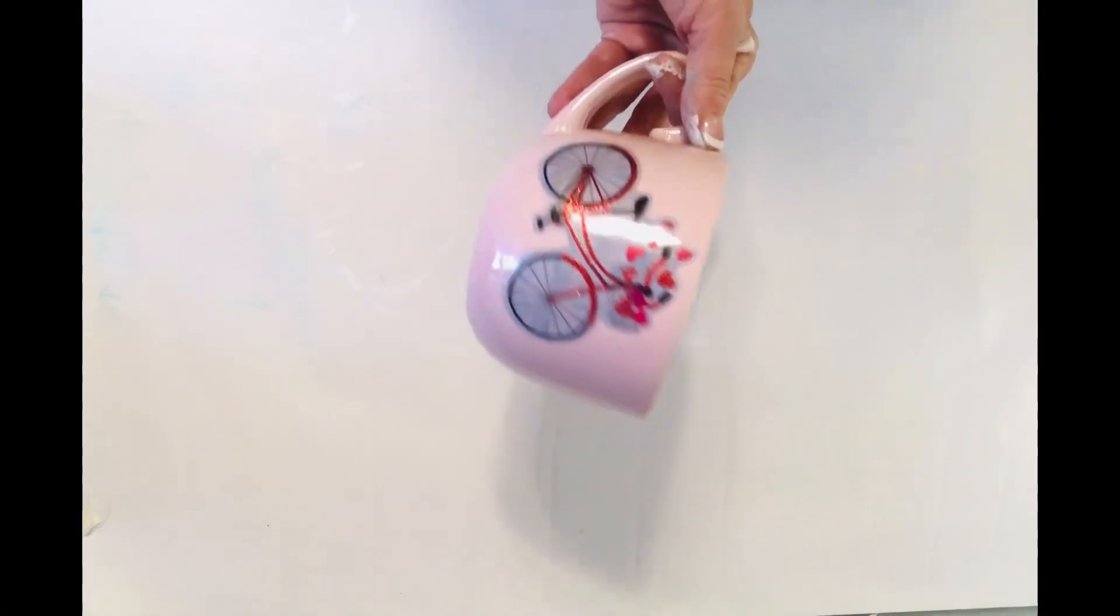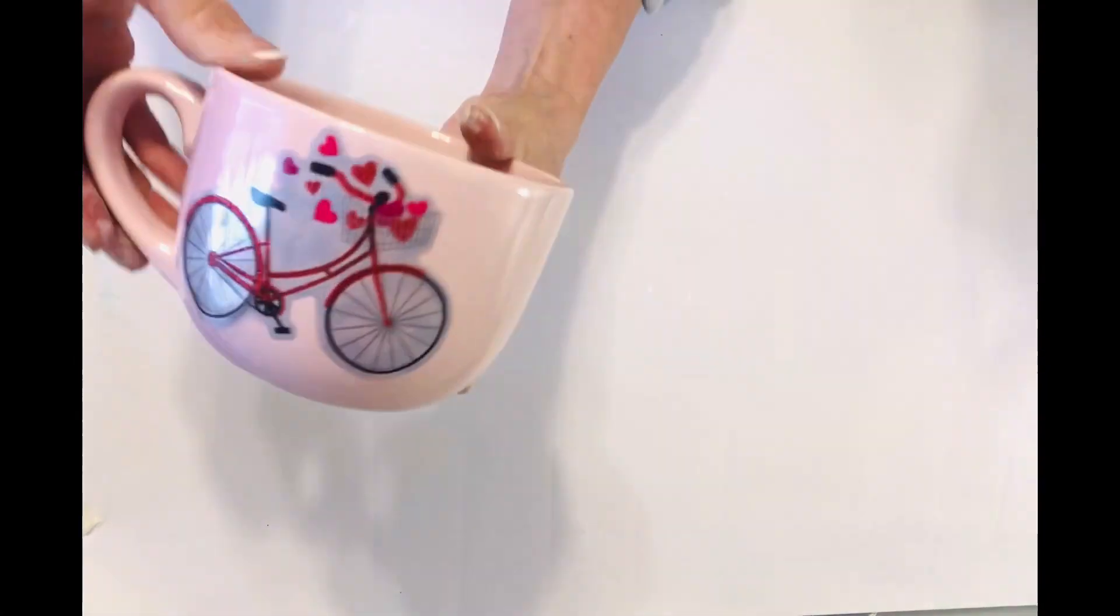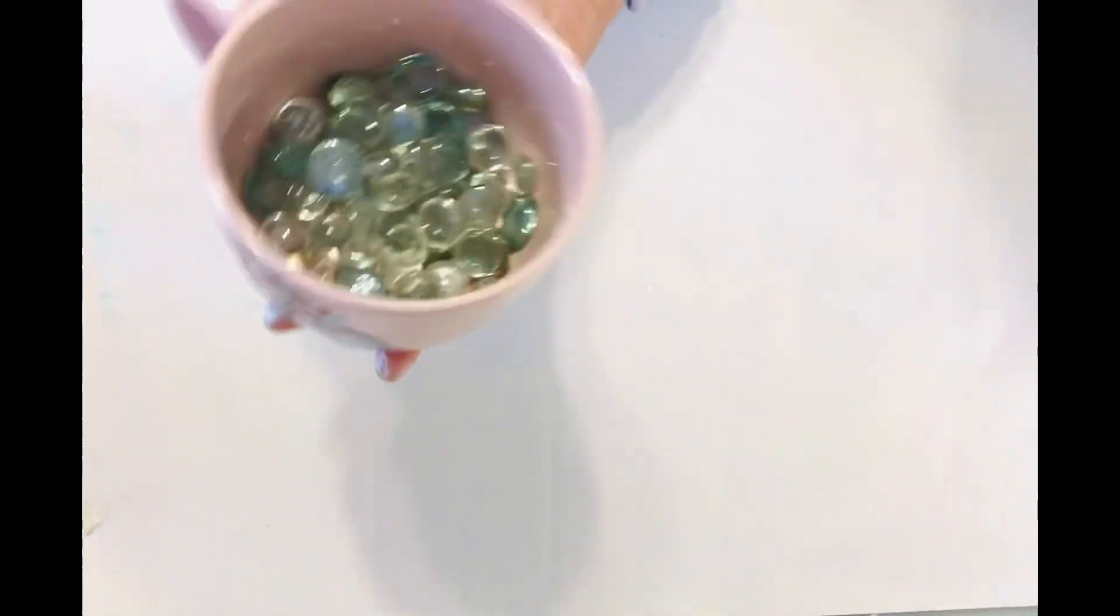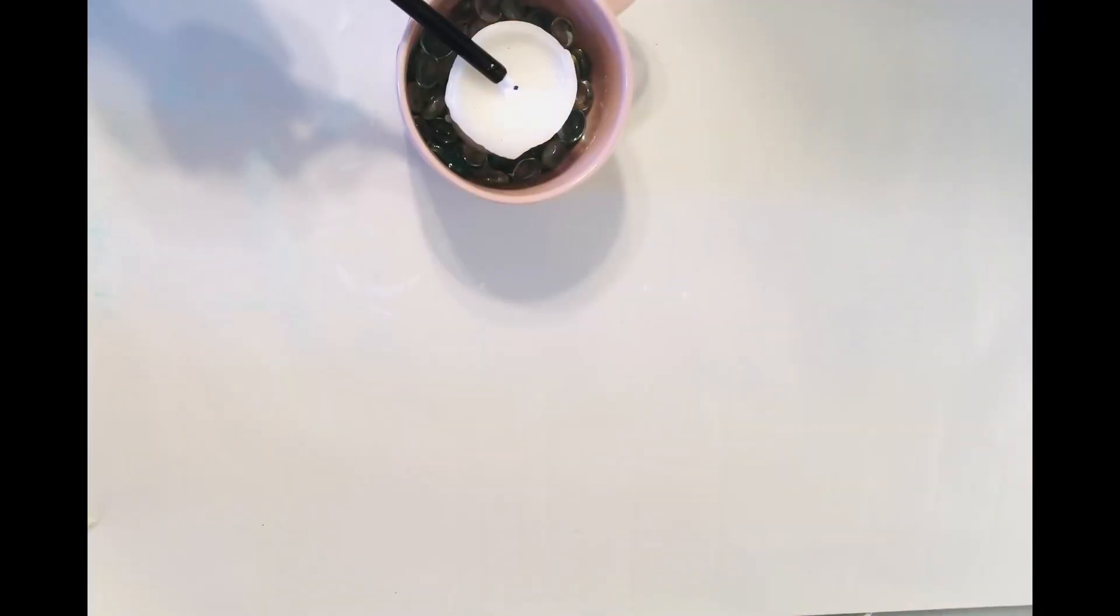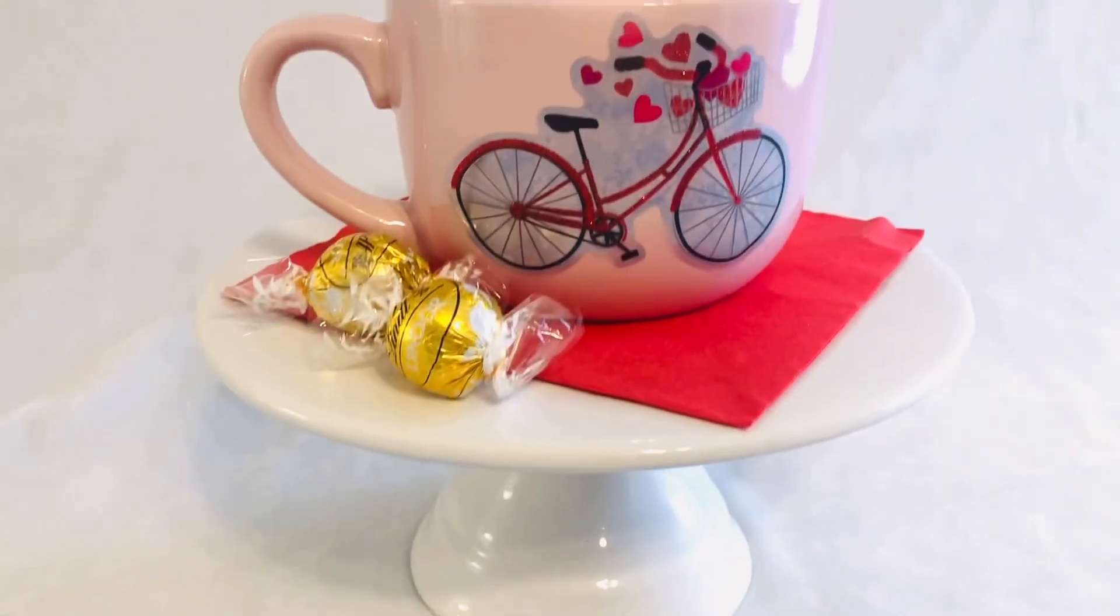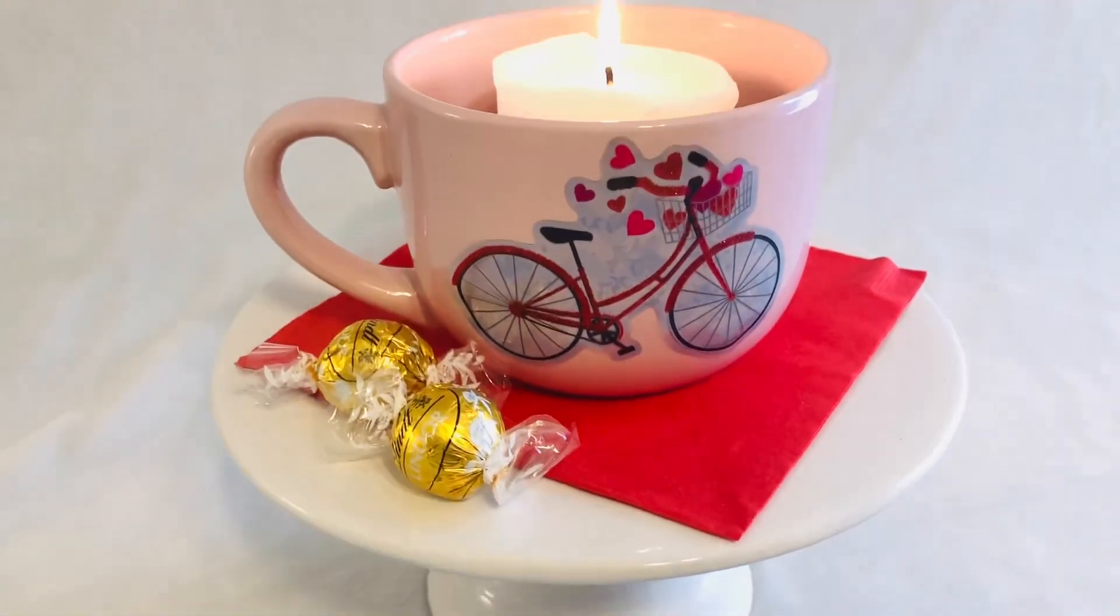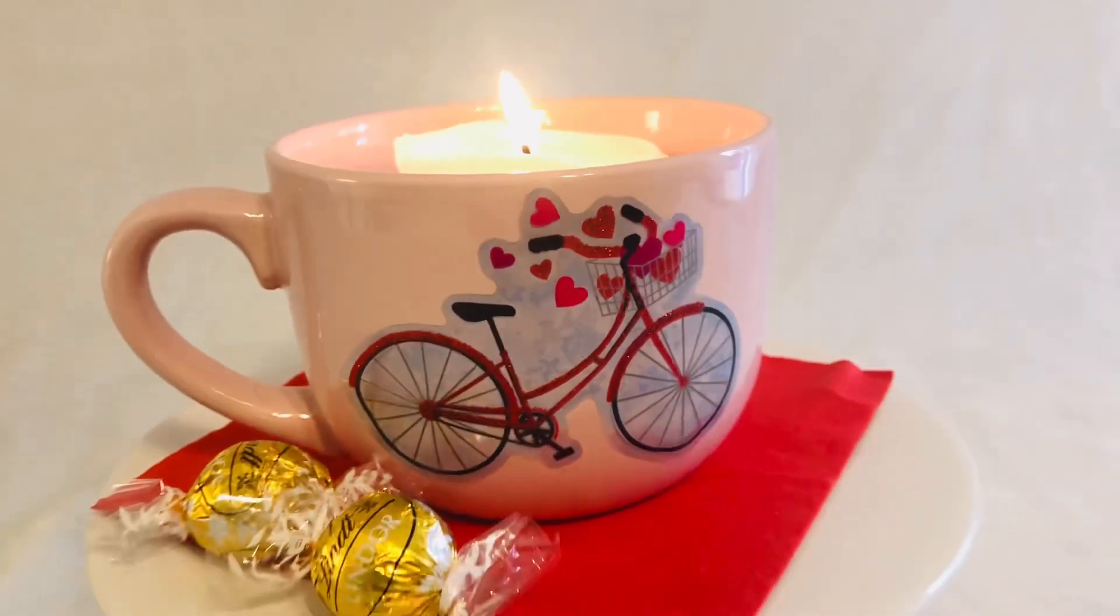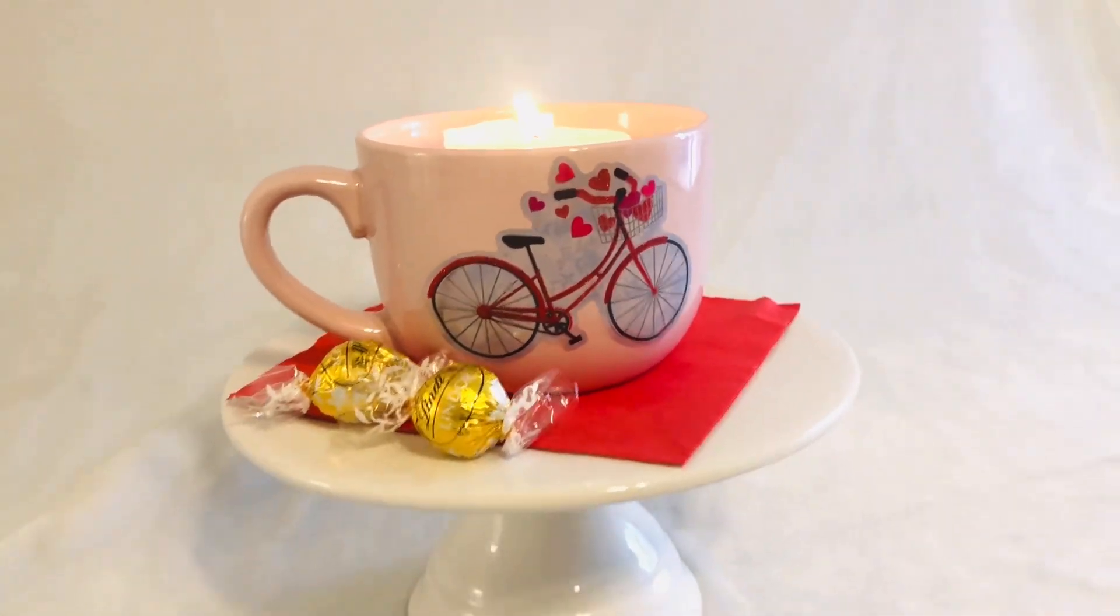For our final project we'll just use one of the decals from those window clings and it's this adorable little heart bicycle. Simply stick that to a mug from Dollar Tree, put in a little bit of the glass vase filler, a pillar candle, and there you have a beautiful little gift or tablescape.